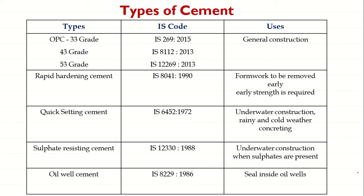The next type is Sulphate Resisting Cement, with IS code IS 12330:1988. As the name suggests, this cement is resistant to sulphate attack. It is used to reduce the risk of sulphate attack on concrete, and hence it is used in construction of foundations where the soil has a high amount of sulphate.